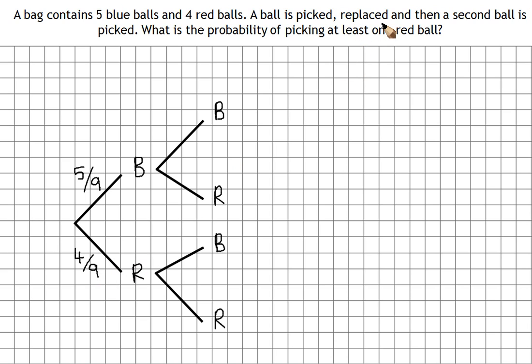Now in this question the ball is replaced, so that means it goes back in the bag. So once we've picked this first blue ball we've still got five blue balls because the first one's gone back, so it's five ninths, and we've still got four red balls so it's four ninths.